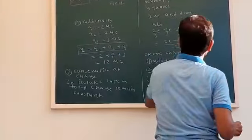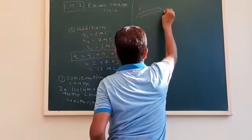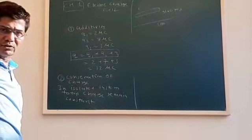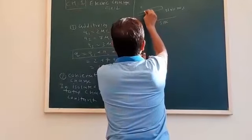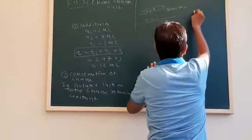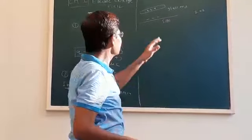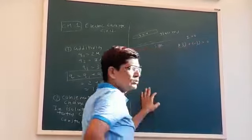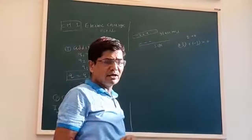Let us take a simple example. A glass rod and silk — initially there is no charge on either. We know charging by friction: when we rub the glass rod with the silk, the glass rod loses electrons and the silk gains electrons. So the glass rod becomes positively charged. But the algebraic sum of the charges, plus 3 and minus 3, makes 0. Initially there was no charge, and finally the total charge is also 0. That is called conservation of charge.